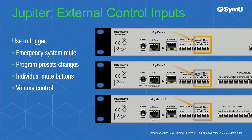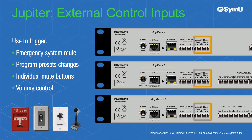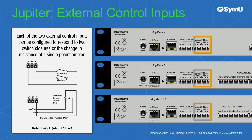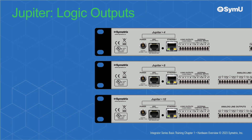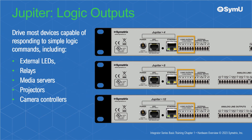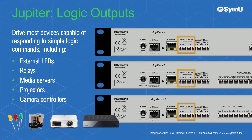External control inputs are used to trigger an emergency system mute, preset changes, individual mute buttons, or even volume control. Each of the two external control inputs may be configured to respond to two switch closures or the change in resistance of a single potentiometer. Jupyter logic outputs can be used to drive external LEDs, relays, media servers, projectors, camera controllers, or almost any device capable of responding to simple logic commands.